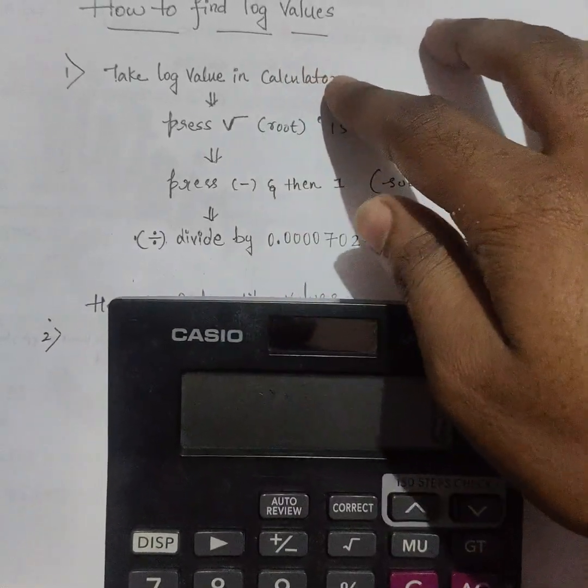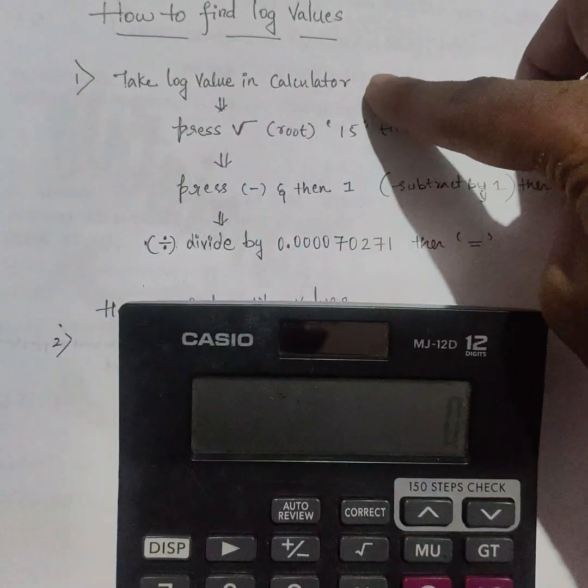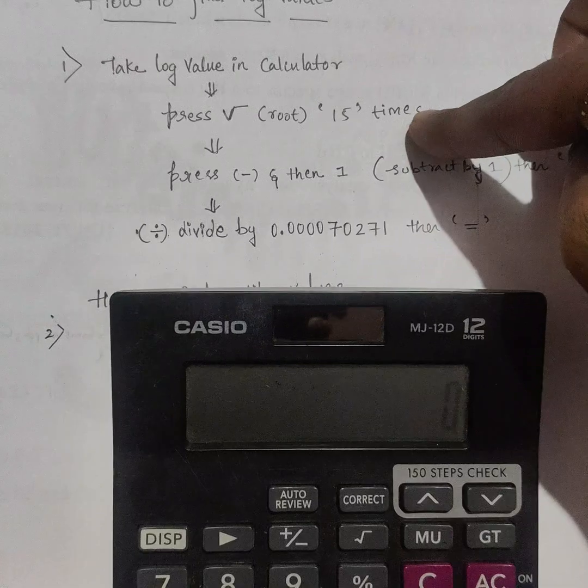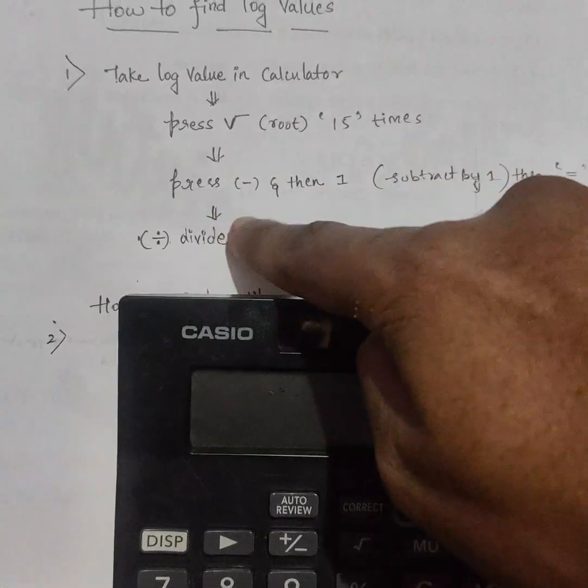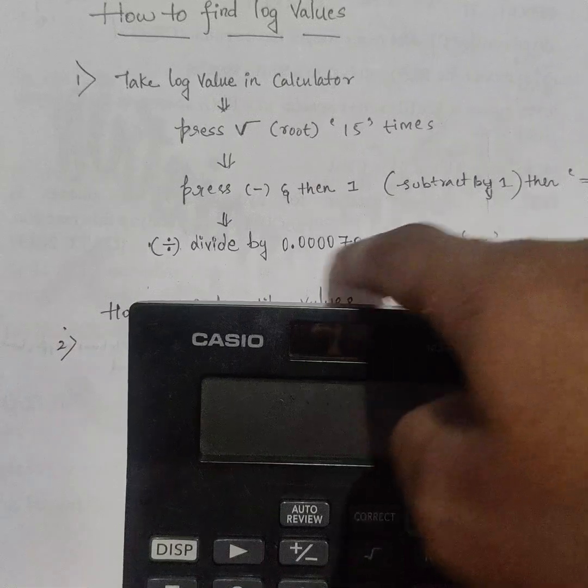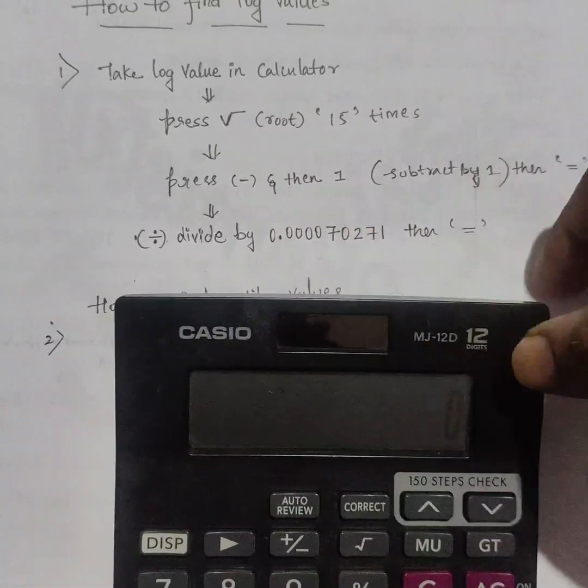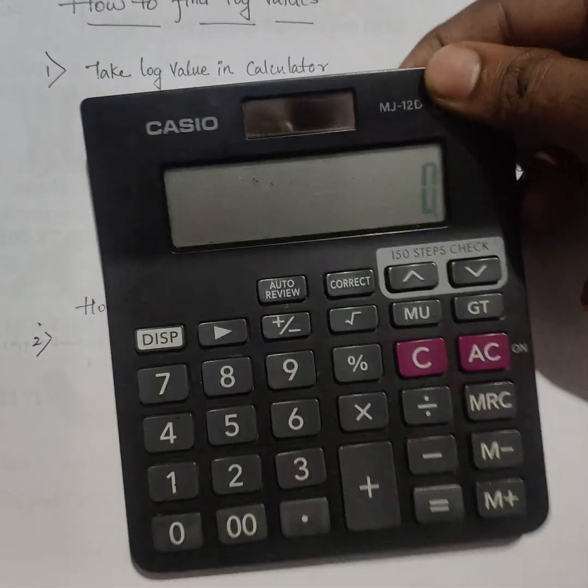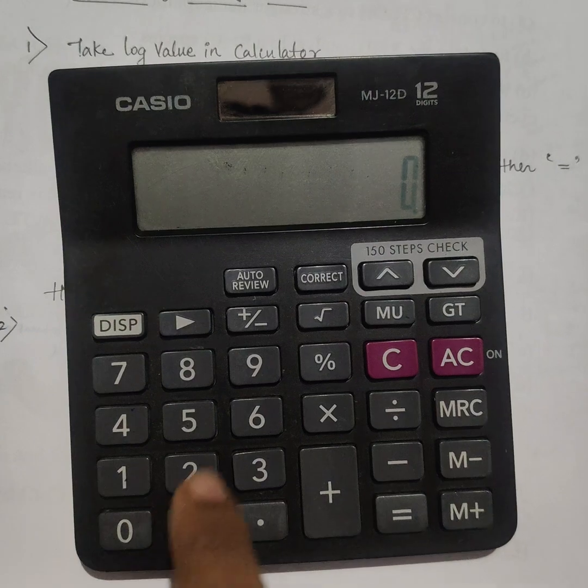Now let us see how to find the log values. Take log value in calculator, press root 15 times, then subtract it by minus 1, and divide by this number. We just have to remember this number. Let us find the log value for 2.